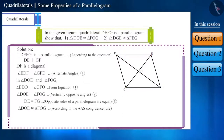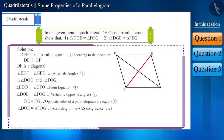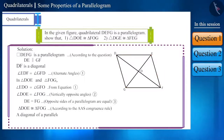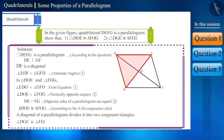Now look at triangle DGE and triangle FEG, both of which are derived by dividing the parallelogram DEFG by diagonal GE. We know that a diagonal of a parallelogram divides it into two congruent triangles. Therefore, these two triangles will be congruent.